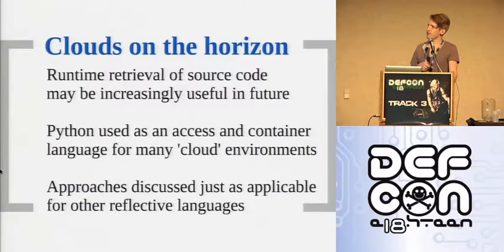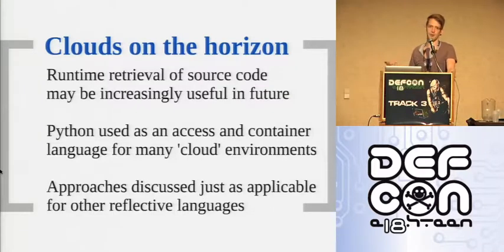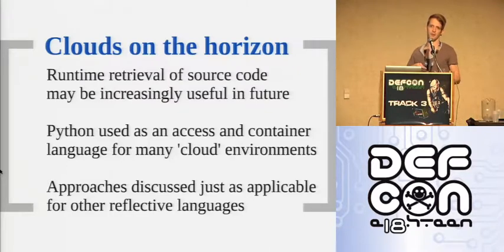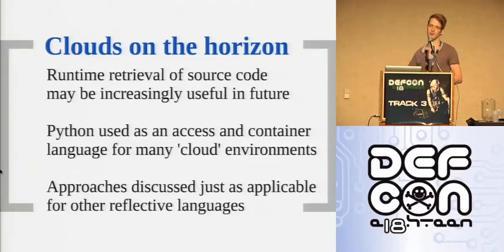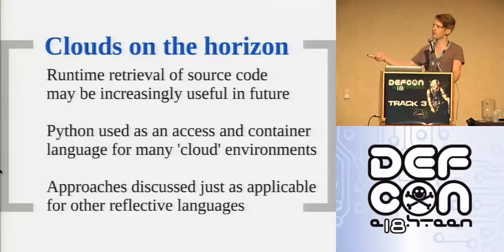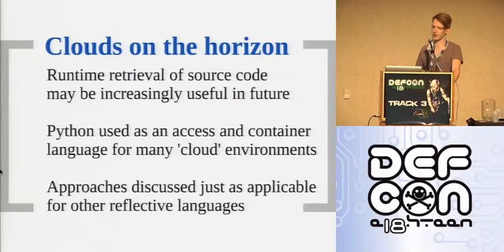I'm going to get in-process at the Python layer, access the full Python namespace, query the objects, and then from querying the live memory objects get back to a source code representation. With a reflective language like Python, querying an object is really useful in the cloud paradigm — you may never have access to their files, but Python is often used as a sandboxing environment. They think if you only have access to their objects that's safe, but with these techniques you can get the source code back from those objects.